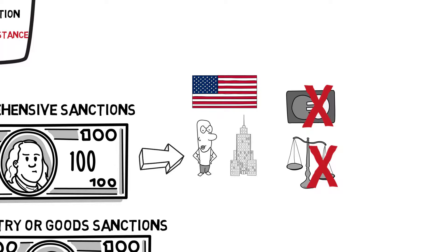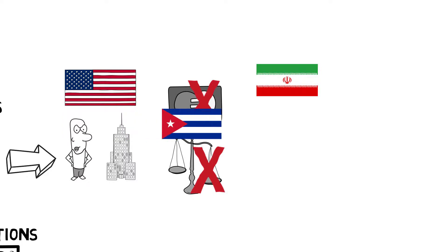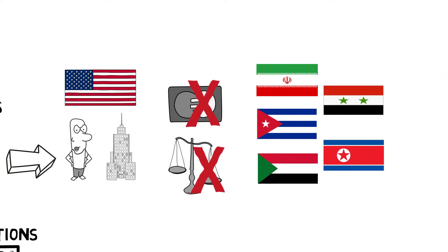At present, the United States has imposed comprehensive sanctions on Iran, Cuba, Sudan, Syria, and North Korea, with other countries subject to limited or regime-based sanctions. On July 12, 2017, the U.S. government lifted comprehensive sanctions against Sudan, according to Executive Order 13761, issued before Obama left office.